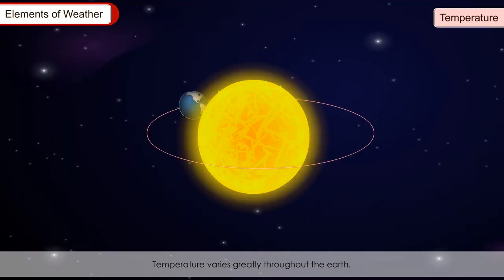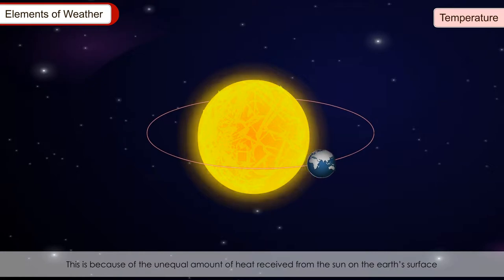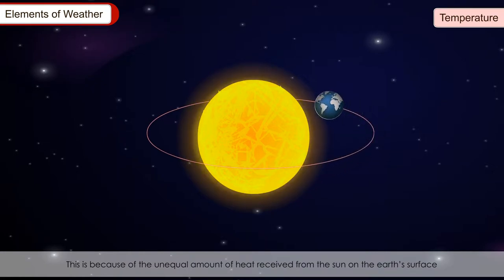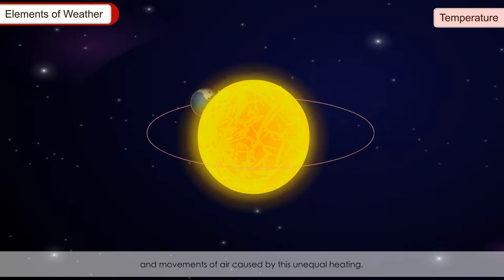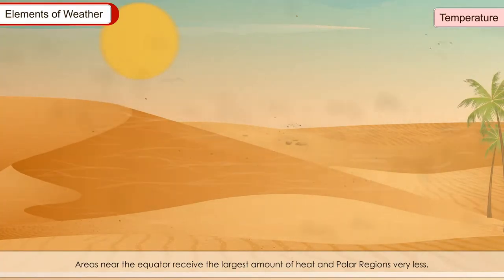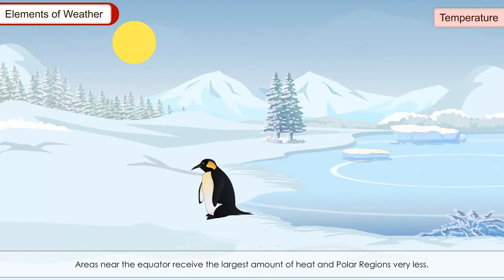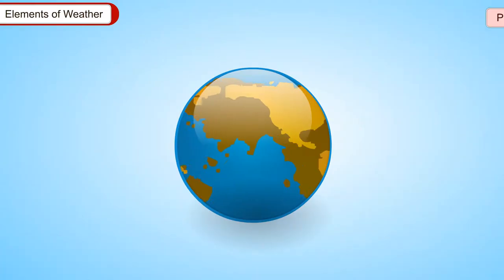Temperature varies greatly throughout the Earth. This is because of the unequal amount of heat received from the Sun on the Earth's surface and movements of air. Areas near the equator receive the largest amount of heat and polar regions receive very less.